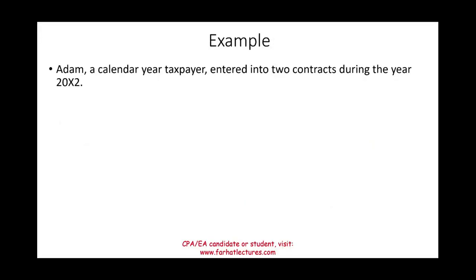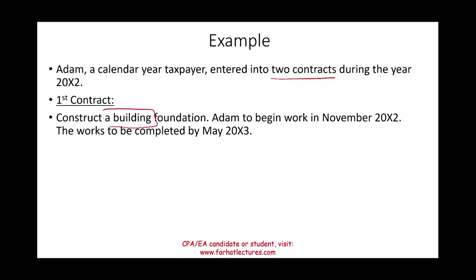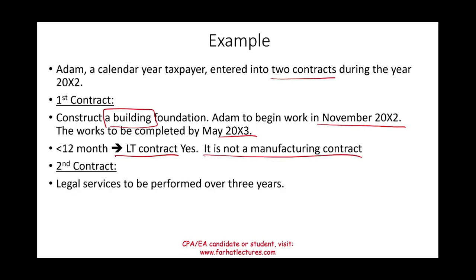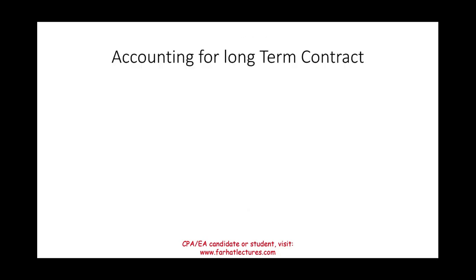Let's look at an example. Adam, a calendar year taxpayer, enters into two contracts during 20X2. The first contract is to construct a building foundation, beginning in November 20X2 and completing in May 20X3. Although it's less than 12 months, it spans two tax periods — so it is a long-term contract. The second contract is for legal services to be performed over three years. Since services don't qualify, this is not a long-term contract.